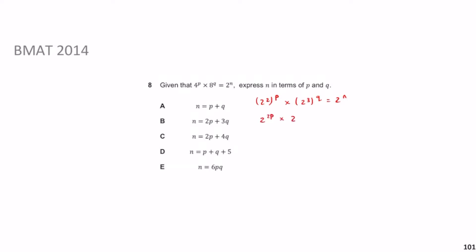So we have 2 to the 2p times 2 to the 3q equals 2 to the n. When you multiply terms with the same base, you add the powers, so 2 to the power of (2p + 3q) equals 2 to the n. That means n equals 2p + 3q, which maps onto answer B.